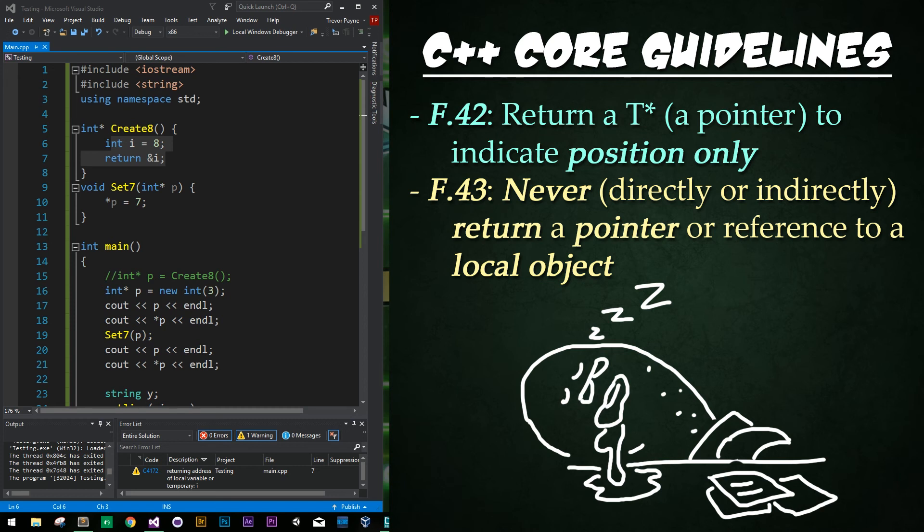Finally the C++ core guidelines say f.42 says return a T* or return a pointer to indicate position only. And f.43 says never directly or indirectly return a pointer or reference to a local object which is just what we saw up above. So this example right here with create eight is a prime example of f.43.